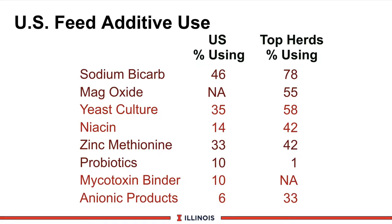If we look at some national research and survey data, we can see the use of additives here used in the United States. Sodium bicarbonate is kind of the standard buffer used in dairy rations. If you look at all U.S. dairy herds, that number was about 46% in 2004. If you look at a survey of national high-producing herds, that number is 78%. Therefore, you can see high-producing herds tend to feed more buffer in their feeding programs.